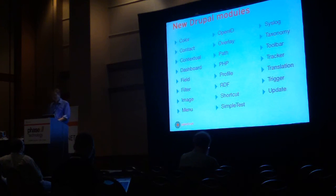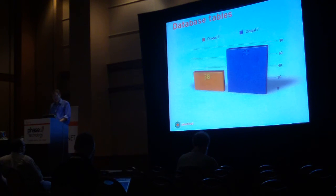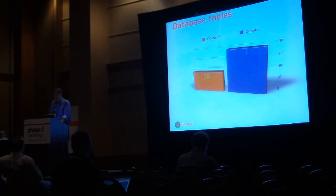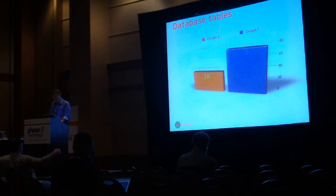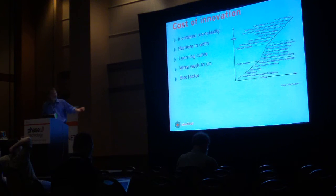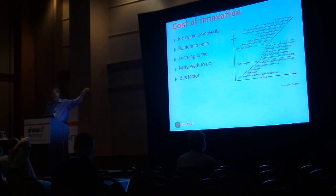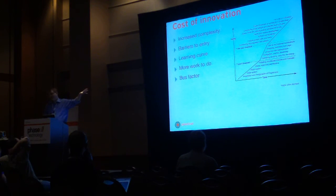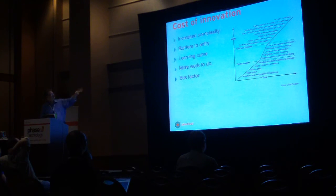These are some new Drupal modules that have come out since then — all the things in Drupal 7 that weren't in Drupal 3. These are the database tables: there were actually 38 tables in Drupal 3, which is a fair amount, but by my count there were 78 in a baseline install of Drupal 7. And there's a big cost to this — this is Dries' famous graph of Drupal skill, and I remember when I got to the 'high kick-ass threshold,' which was like two and a half years ago.